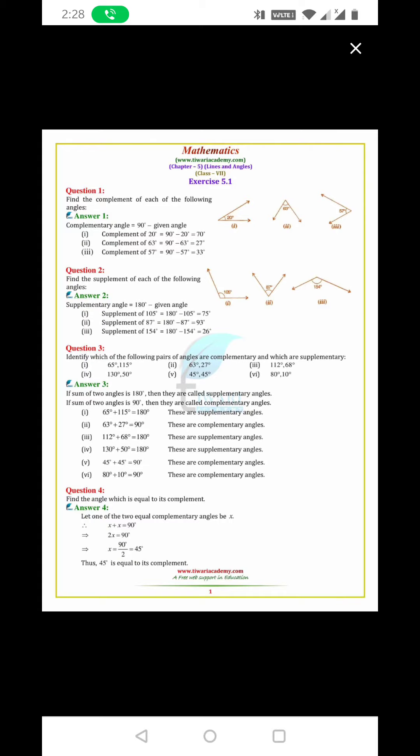112 and 68 degree are supplementary angles because the sum is 180 degree. 130 degree plus 50 degree is equal to 180 degree. These are supplementary angles. 45 degree plus 45 degree equals 90 degree. These are complementary angles. 80 degree plus 10 degree equals 90 degree. These are complementary angles.